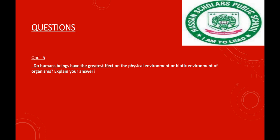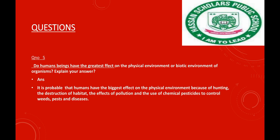The living things — the plants and the animals — it is established that humans have the biggest effect on the physical environment because of hunting, the destruction of habitat, the effects of pollution, and the use of chemical pesticides to control pests and disease.